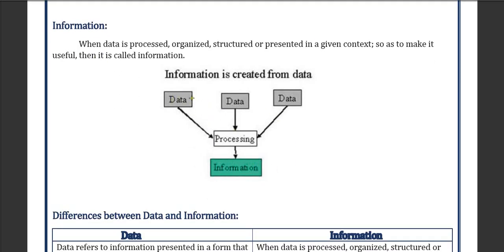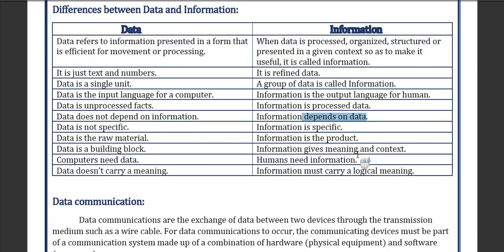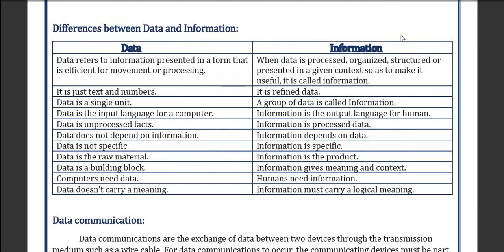Data is the raw material and after processing it generates information. Data is just text or a number, but information is refined data. Data is a single unit while information is a group of units. Data is the input language for computers but information is the output language for humans. Data is unprocessed; information is processed. Data does not carry meaning but information carries meaning. You can take a snapshot of this — it is very important for exam questions.